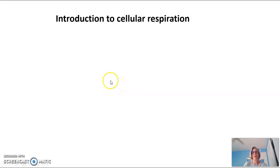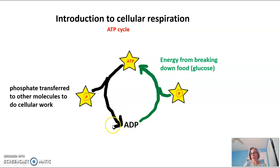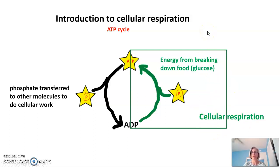Hi everyone. Tonight's video is on the introduction to cellular respiration. You should have already watched the video on the ATP cycle. That ATP cycle is pictured here, and that's where we have our high energy molecule, ATP, which transfers one of its phosphates to another molecule to allow that molecule to do cellular work. That generates a molecule called ADP, or adenosine diphosphate, and then another phosphate has to be added back onto that molecule to regenerate ATP. The energy for putting a phosphate back on the ADP to make ATP comes from food, and the process responsible for allowing this to happen is called cellular respiration.